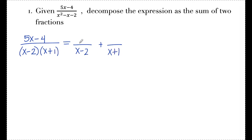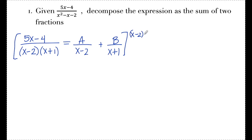My goal is to solve for the numerator in each of these fractions. Since the denominators are linear, I can put a variable in each numerator — I'll call them a and b. To solve for a and b, I'm going to clear the denominators by multiplying the entire equation by the common denominator x minus 2 times x plus 1. In the first term, the denominator cancels completely, leaving 5x minus 4. In the second term, the x minus 2s cancel, leaving a times (x plus 1). In the last term, the x plus 1s cancel, leaving b times (x minus 2).